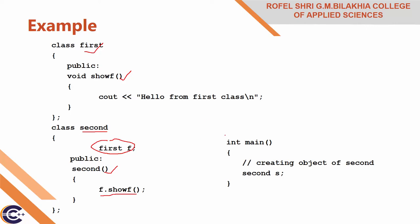In the second class constructor, call that method using the object — that is 'f.showF'. Now in the main function, create an object of the second class. When we create an object of the second class, it will call the constructor of the second class, which will execute 'f.showF', calling the function 'showF' of the first class, and it will print 'Hello from First Class'. That is how execution works in containership.